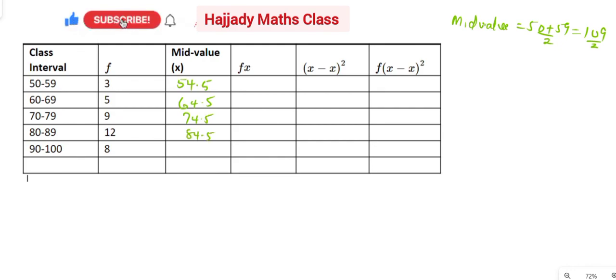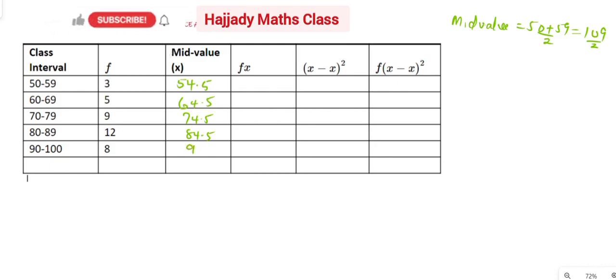Don't forget that the last interval is from 90 to 100, so our mid value is not going to be 94.5 — instead the average is 95.5. So that is our mid value.